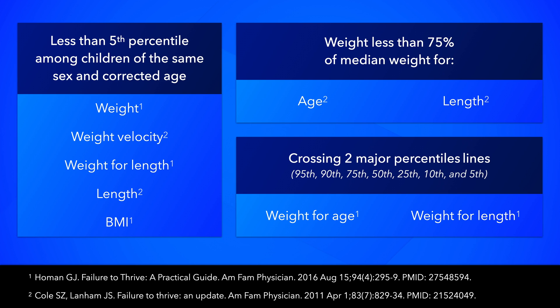Other criteria such as average daily weight gain may also be taken into consideration. In premature infants, corrections for gestational age should be made for weight until 2 years of age.